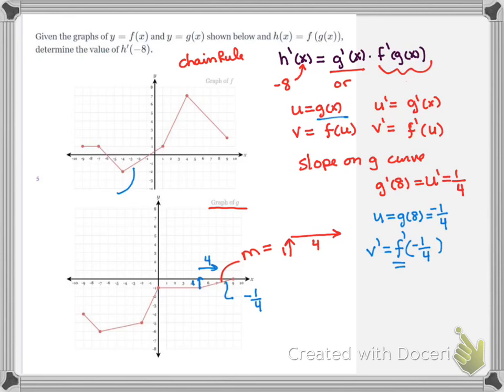Well that's anywhere on this line, my slope is the same. Negative 1 quarter happens to be about right here, but it doesn't matter. The slope for that whole line is up 3 over 4. So v prime equals f prime at negative 1 quarter is the slope of that f curve anywhere in that section. Well that's 3 over 4.